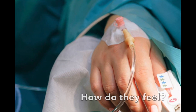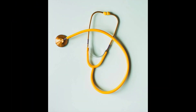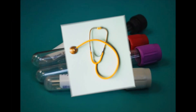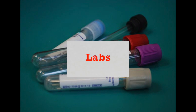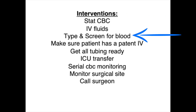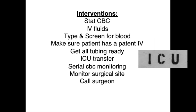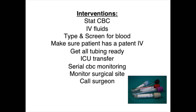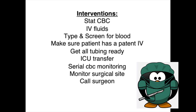This is why it's so important to monitor the surgical site appearance and the amount of drainage. It's also important to monitor how the patient feels and appears. If the patient complains of any strange or odd feelings, get the vital signs and often get a chemistry panel. A STAT CBC likely needs to be done. Interventions if bleeding is suspected include: STAT CBC, IV fluids, type and screen for blood, ensuring the patient has a patent IV, ICU transfer, serial CBC monitoring, monitoring the surgical site, and calling the surgeon.